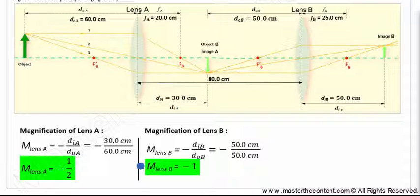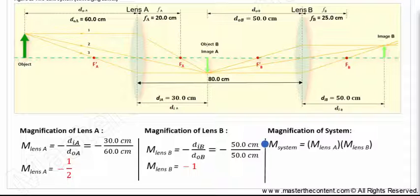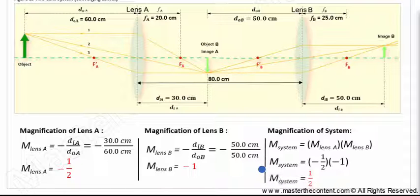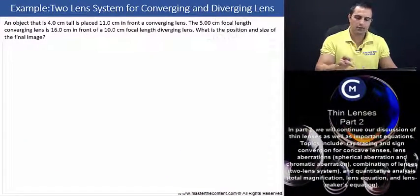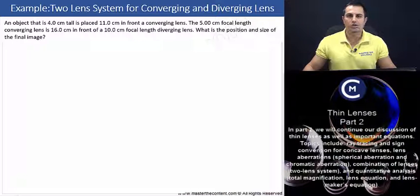Now that we have the magnification of each lens, let's find the total magnification of the system using the total magnification equation. Filling in the magnification of lens A (negative one half) and lens B (negative one), upon solving we find the total magnification of the system is one half. The final image is real, erect, and reduced. Let's now proceed to the next example involving a converging and diverging lens.